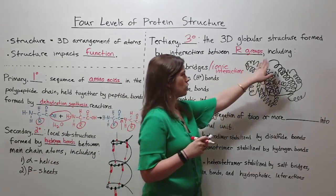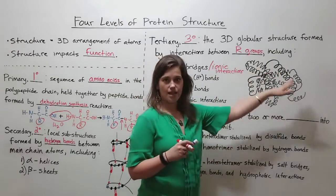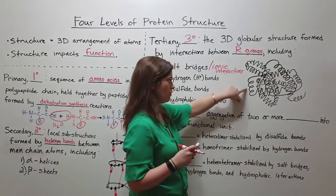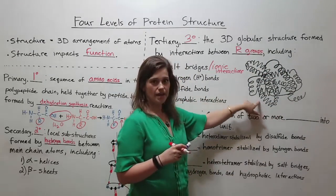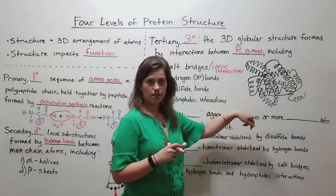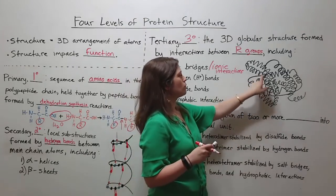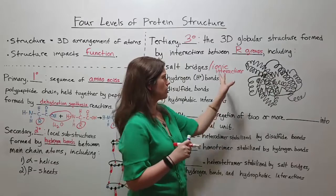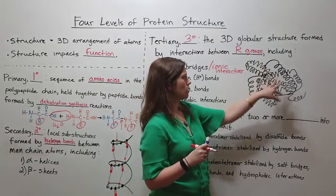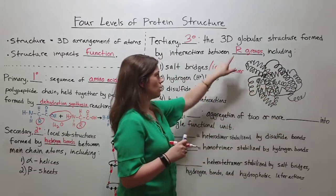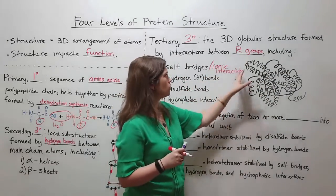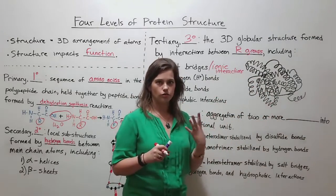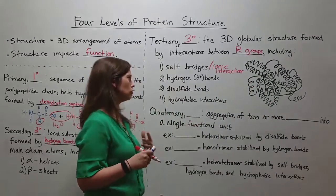In the end, you get a 3D structure that looks something like this. You can see that it has many alpha helices and many beta pleated sheets — those units of secondary structure just fold up based on R group interactions to create this functional 3D structure.